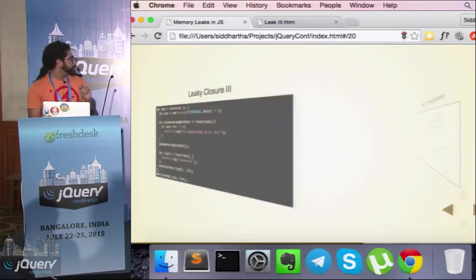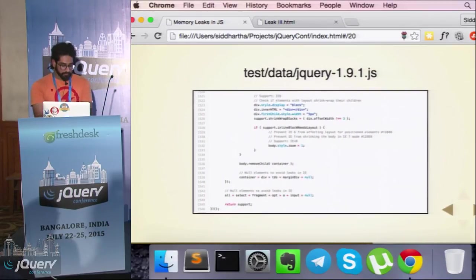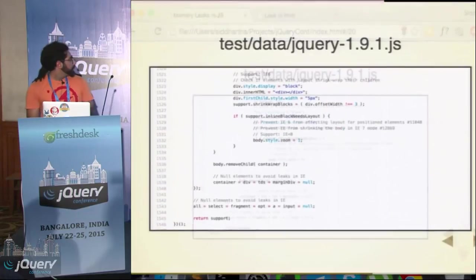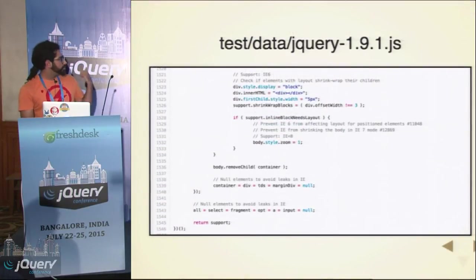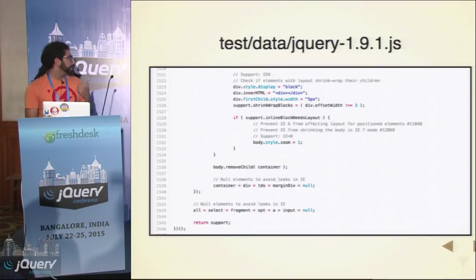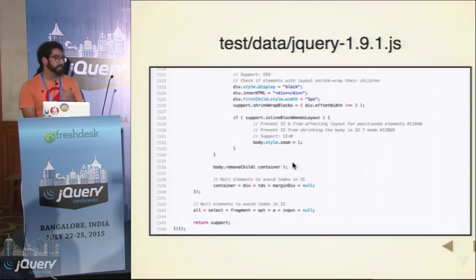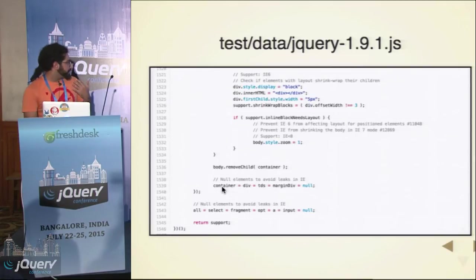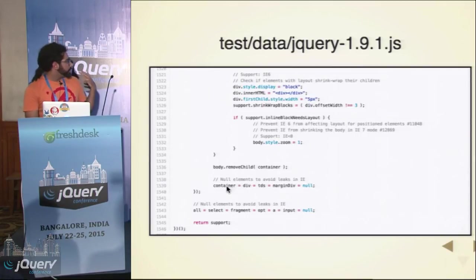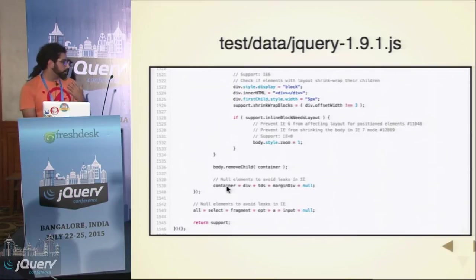There's another small snippet I'd like to show you. I went to jQuery's GitHub repo and searched for memory leaks, and this is just one of the snippets I got. This is an exercise I highly encourage you to do — you can see things they have done in production live code, fixes they have made over time to curb leaks.